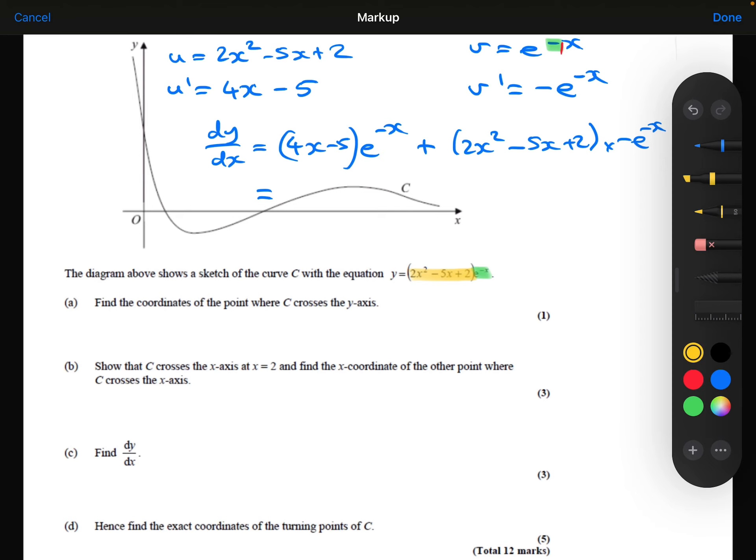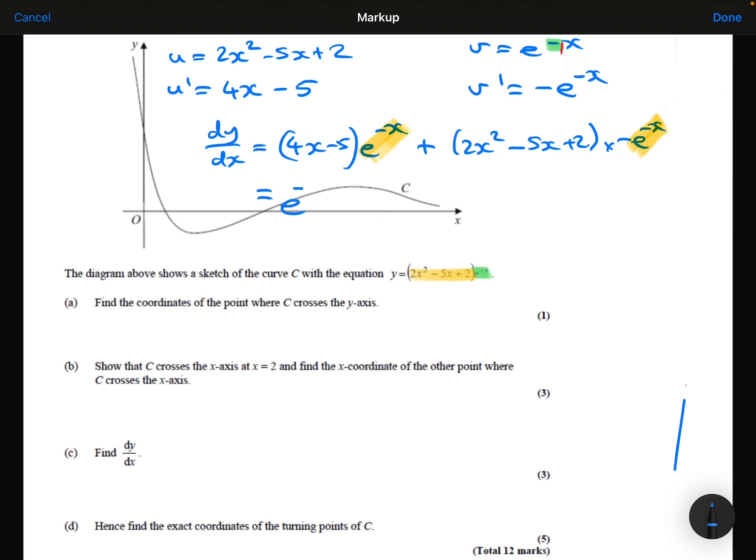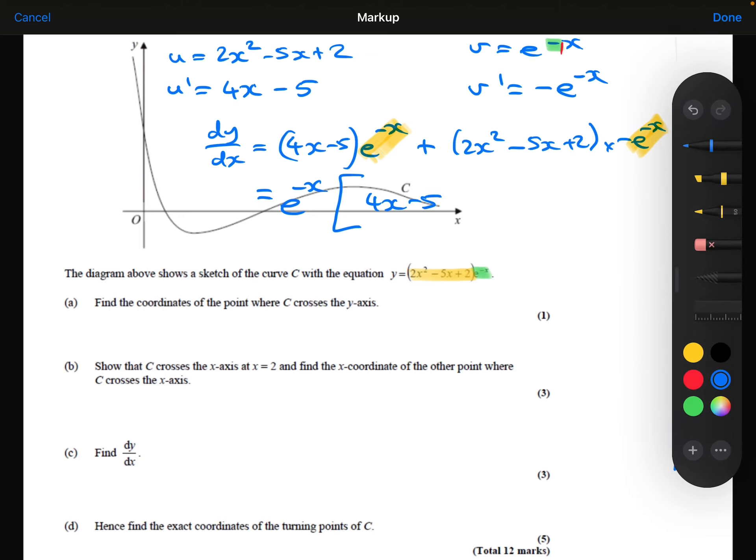I can factorize the exponential term outside just to make this a bit simpler. I don't actually have to do this for part C, but I'm going to do it anyway because I'm going to need to do this for part D, and it's a good thing for mathematicians to do to simplify as they're going along. So I'm going to factorize this exponential outside, which will leave me with 4x minus 5, and then I've got this quadratic times by the minus 1, so I'll get minus 2x squared plus 5x minus 2. So that's my answer for part C.